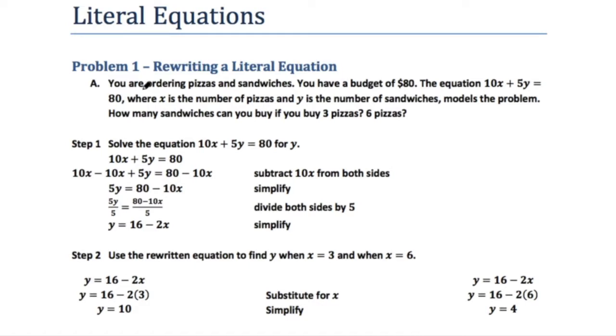Alright, so let's start in a context. It says you are ordering pizzas and sandwiches and you have a budget of $80. The equation 10x plus 5y equals 80, where x is the number of pizzas and y is the number of sandwiches, models the problem. How many sandwiches can you buy if you buy three pizzas? What about six pizzas?